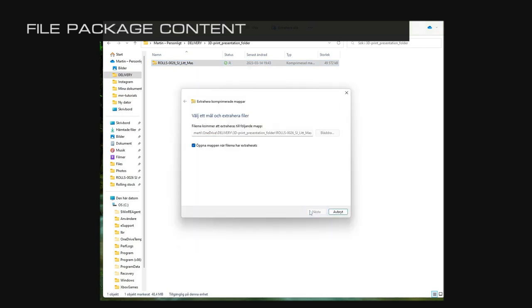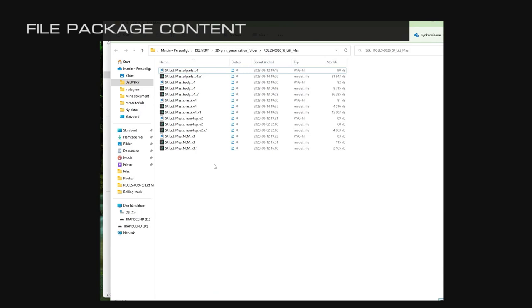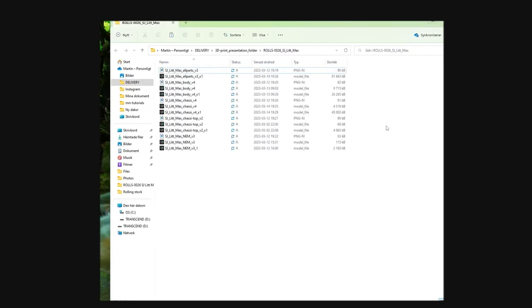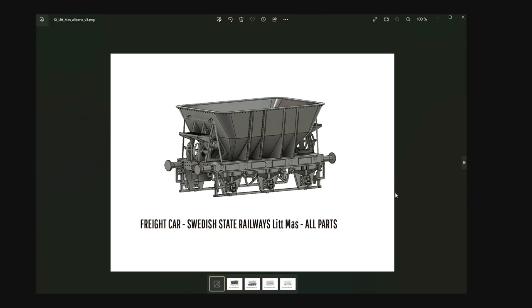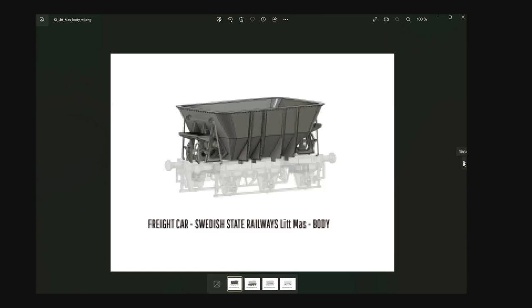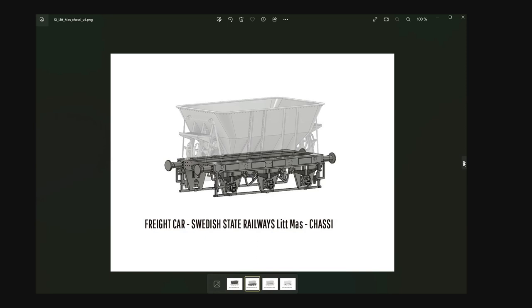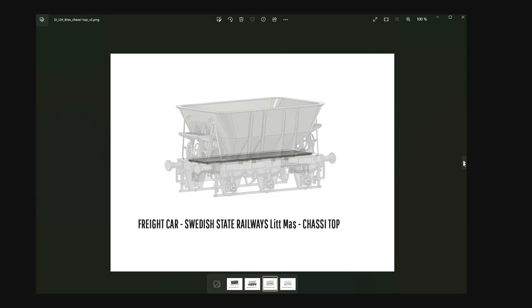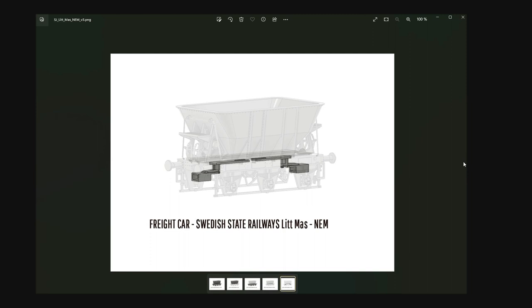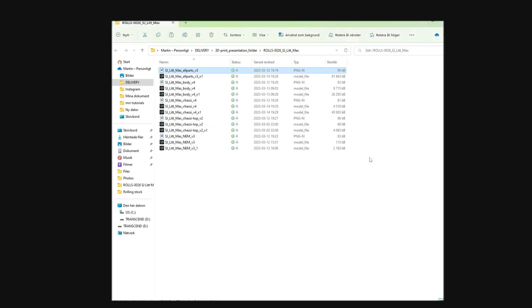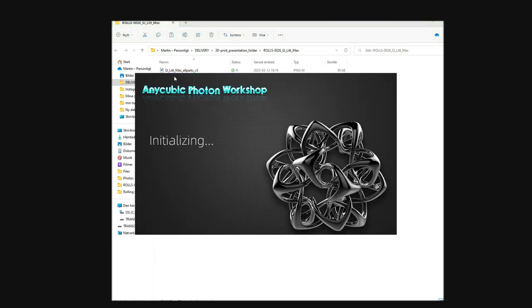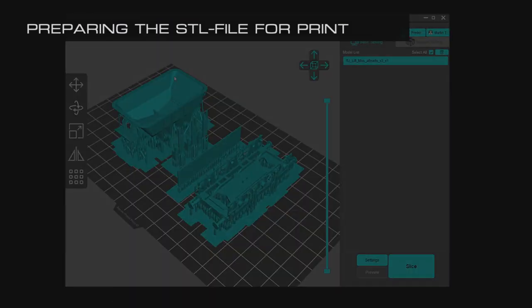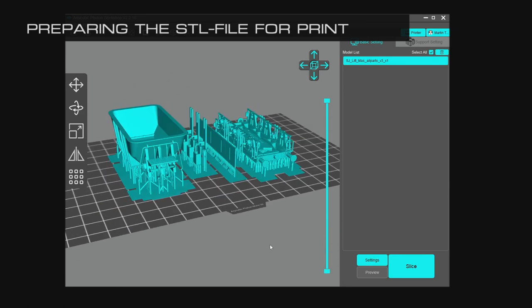When you download the file from CG Trader, you will have a compressed file. Right-click on that, select Extract All, and that will create a folder for you with all the files inside. Now each component in this package will have three files: one is a wireframe preview image, then it's the file without supports, and then it's the file with supports. The last one typically has a name called underscore.